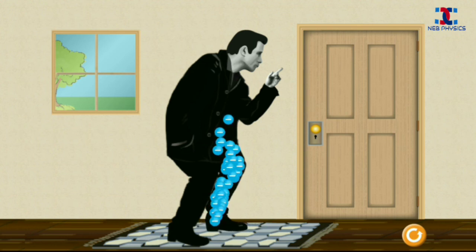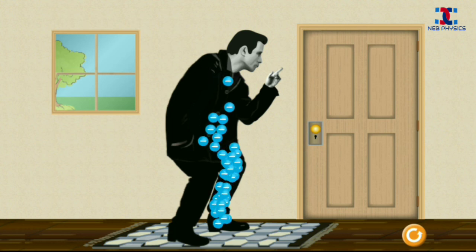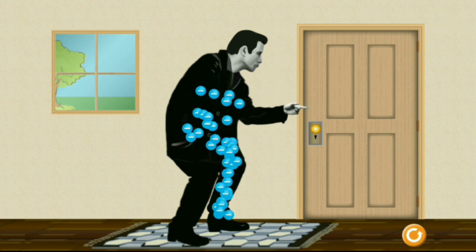And whenever you touch a metallic object like a doorknob, these excess electrons transfer to the doorknob and you feel electric shock.